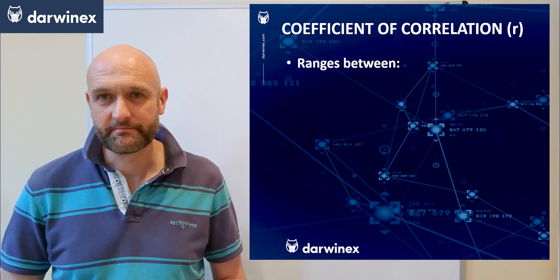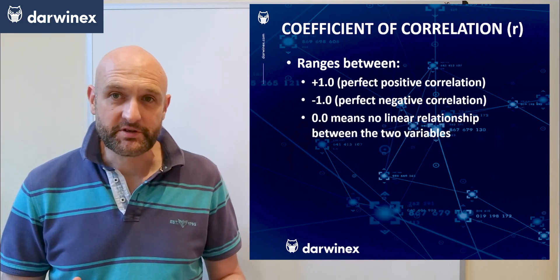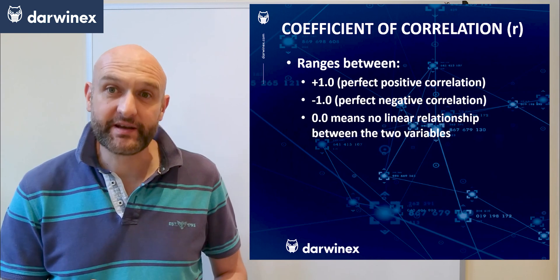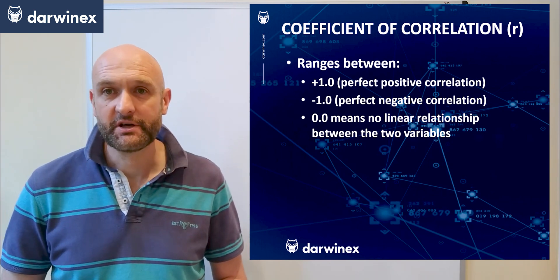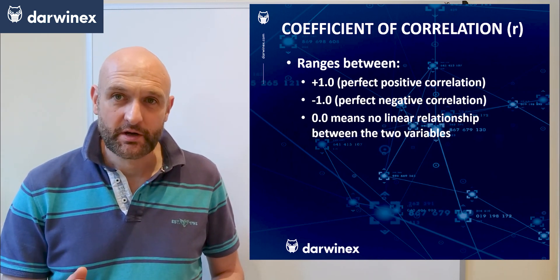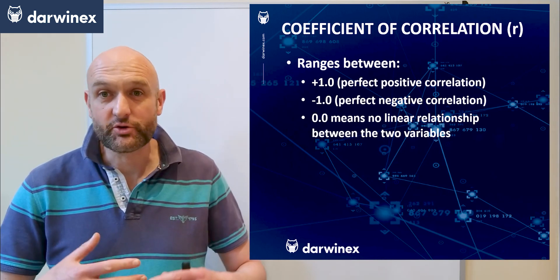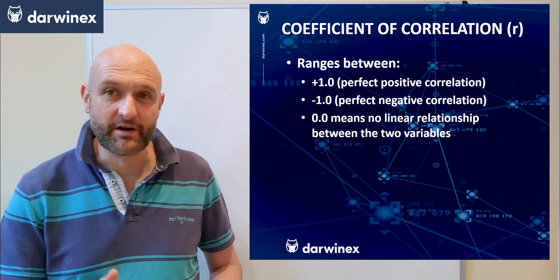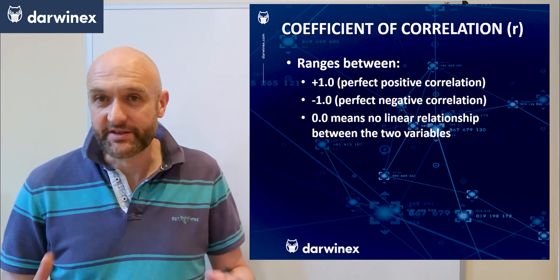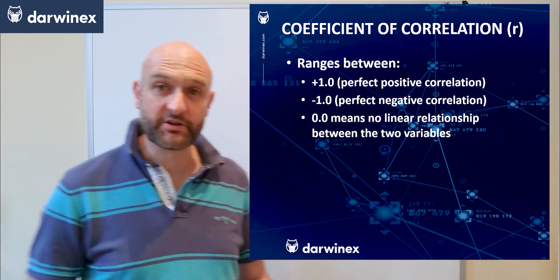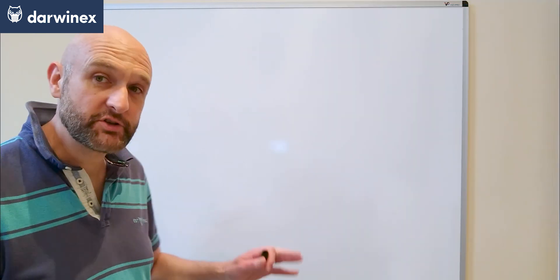The possible values range from +1.0, which means perfect positive correlation, down to -1.0, which means perfect negative correlation, and all the values in between with 0.0 meaning no correlation at all. Let me show you how this can be used on an equity curve, but first we'll start with a simple scatter diagram.